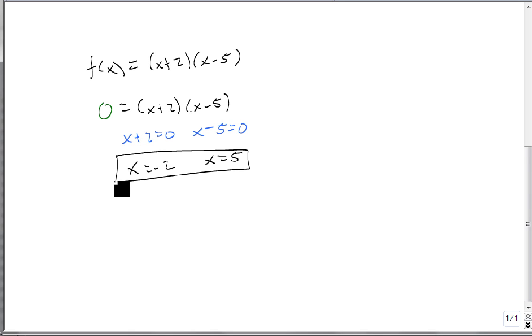One more example. Suppose we have g of x equals x times x minus 3 times x plus 2. Here we have 3 x's, so we're going to end up with 3 zeros.